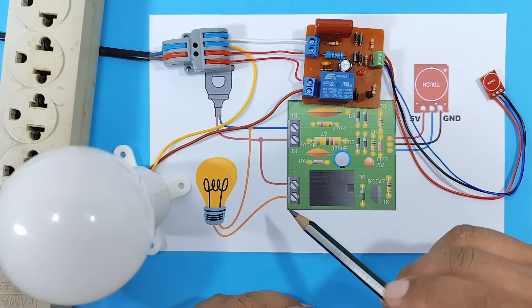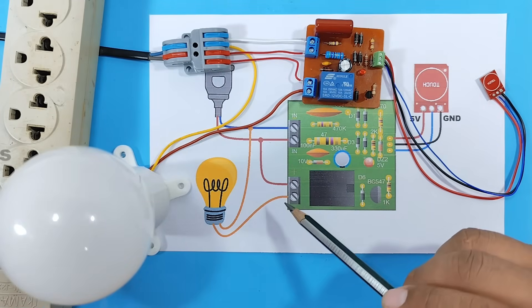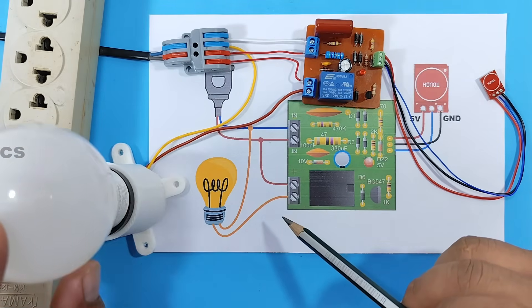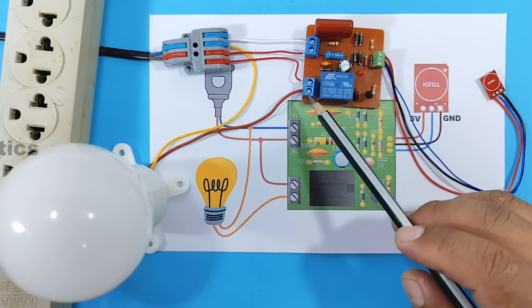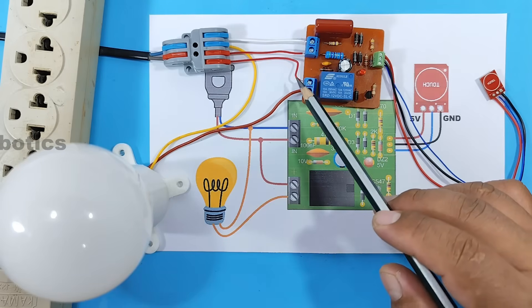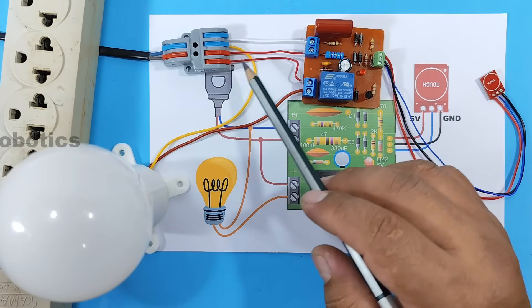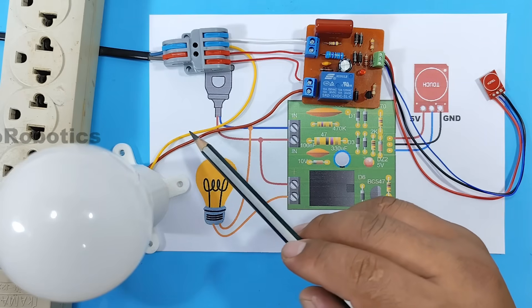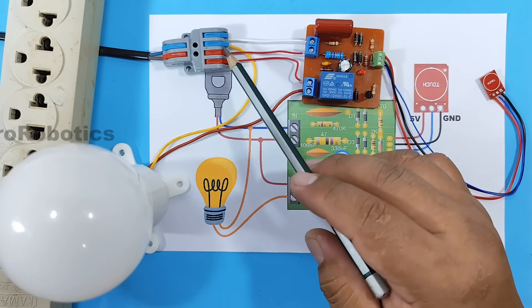With all the connections made, let's now test our board. We can see that we have our light bulb connected directly to one of the relay terminals, and the other terminal is connected to the live wire via a red wire. The other light bulb wire is connected directly to neutral.